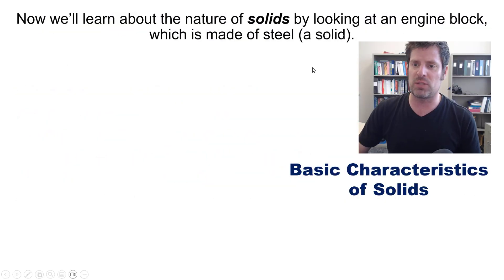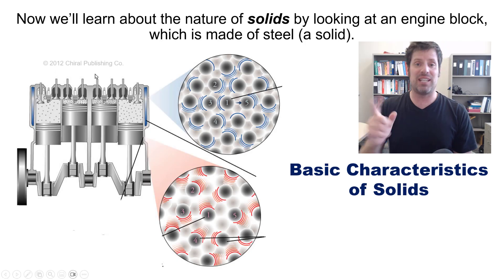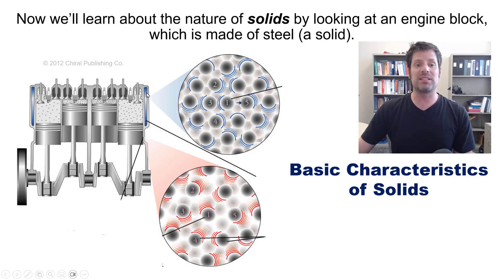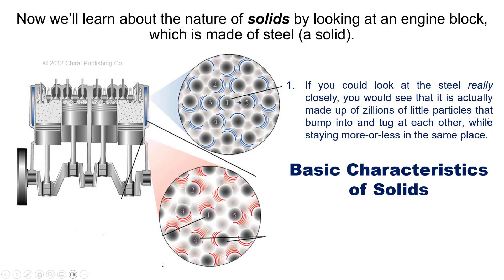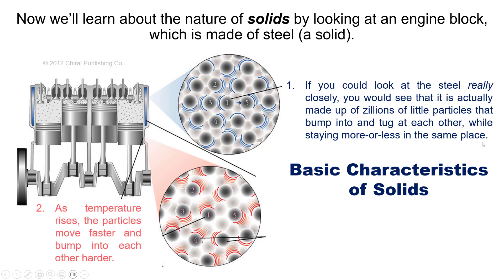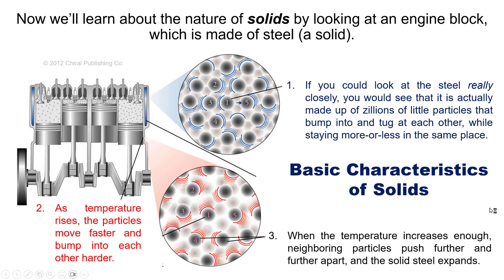We learn about the nature of solids by looking at an engine block made of solid steel — this image is taken from an excellent chemistry textbook written by Mark Bishop, referenced in the description below. If you were able to zoom in on the engine block really closely, you would see it is made up of zillions of tiny particles that do move — they bump into and tug at each other while staying more or less in the same place. As temperature rises, these particles move faster, bump harder, push further apart, and the solid steel expands.